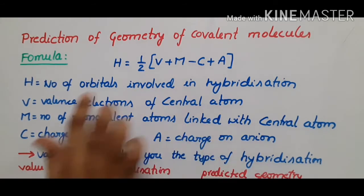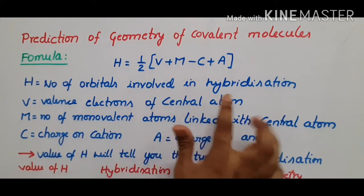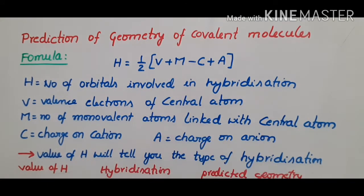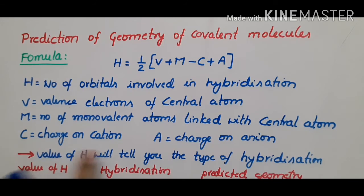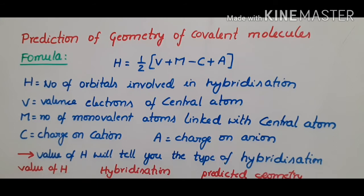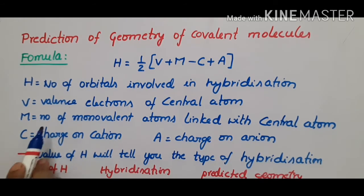In this formula, V is the valence electrons of the central atom, H is the number of hybrid orbitals in hybridization, M is the number of monovalent atoms linked with the central atom, C is the charge on the cation, and A is the charge on the anion. You need to know the valence electrons of the central atom and the number of monovalent atoms linked to it.